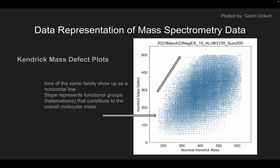Kendrick mass defect plots are used to identify homologous compounds that differ by CH2 units, as ions of the same family show up as a horizontal line, meaning that if the composition of one ion is determined, the compositions of other ions within the family can be deduced. A slope in the plot represents functional groups that contribute to the overall molecular mass but are not a part of the CH2 unit.